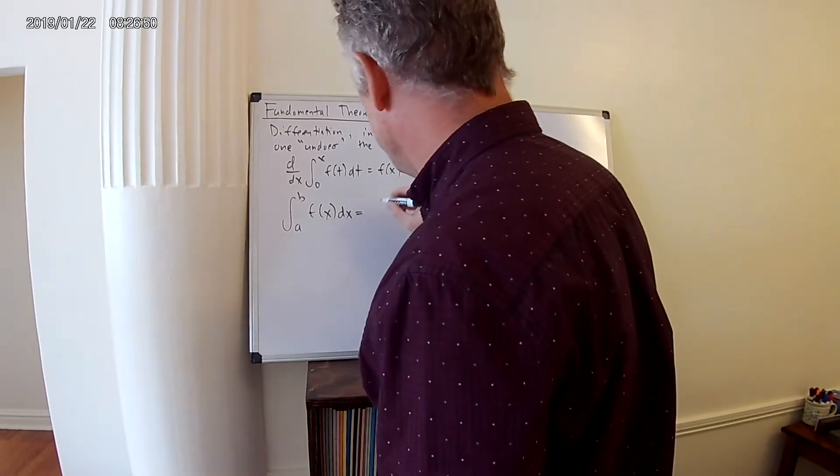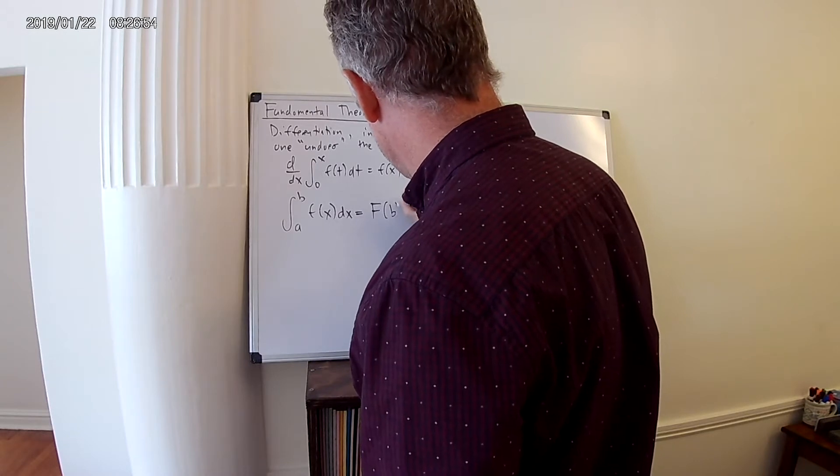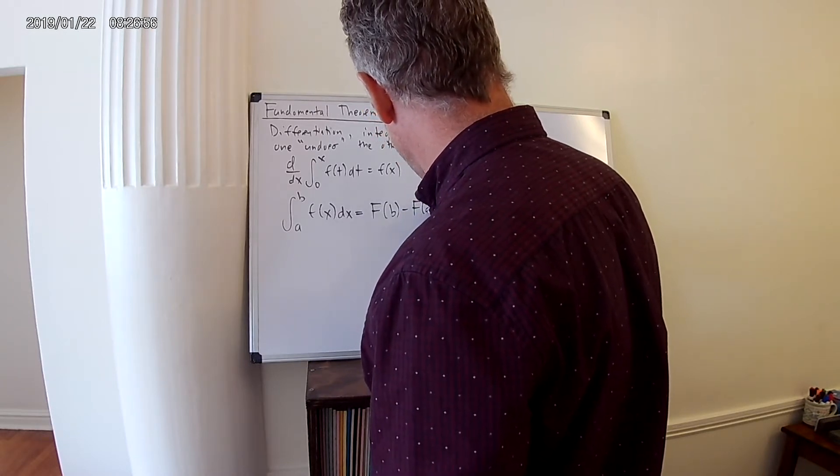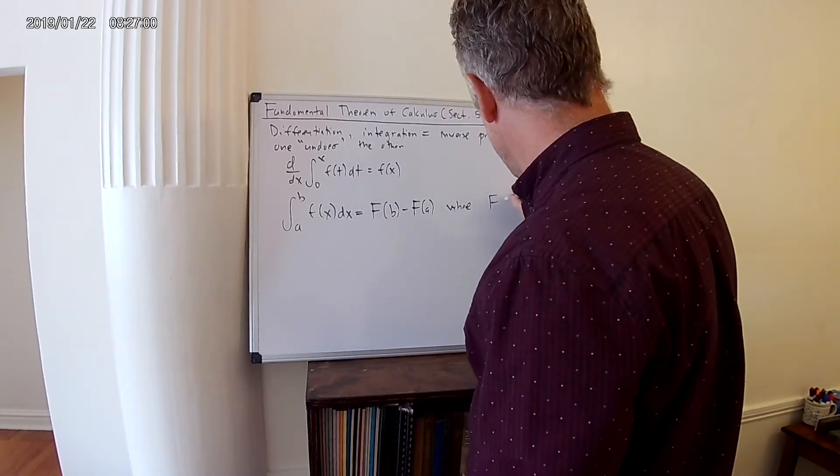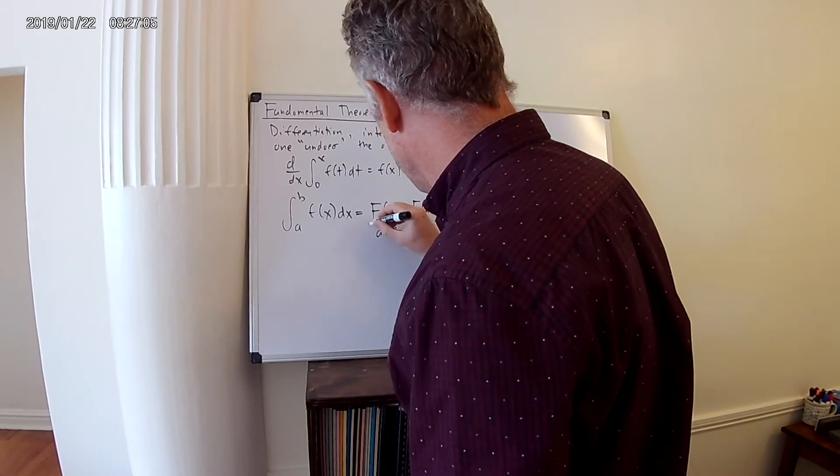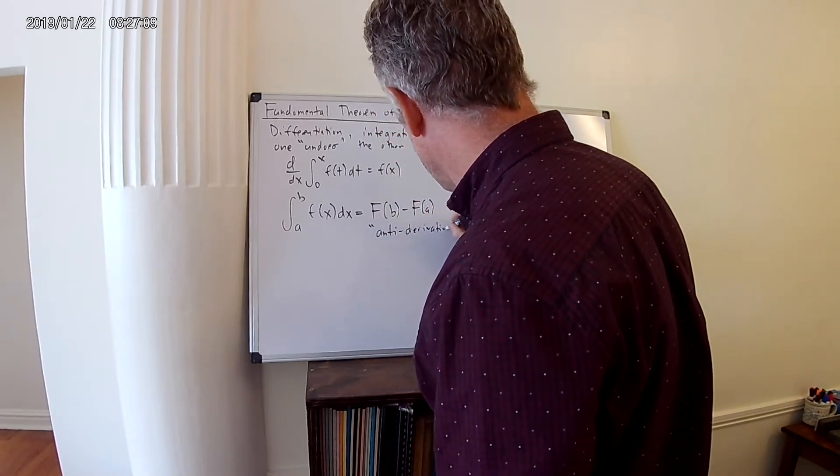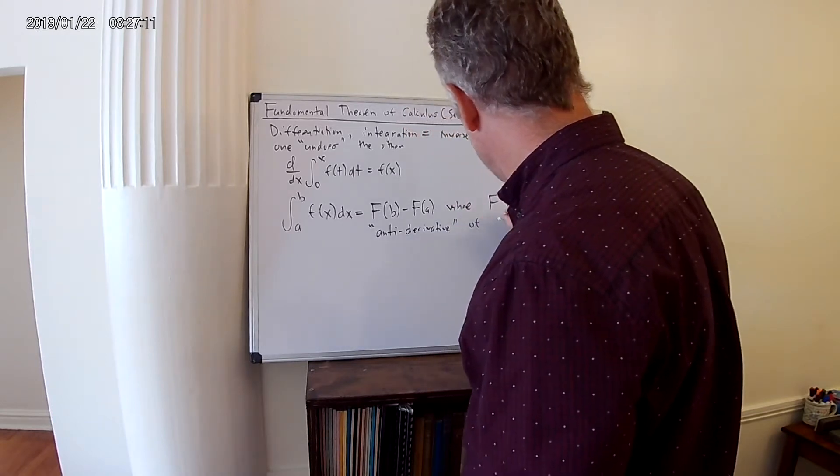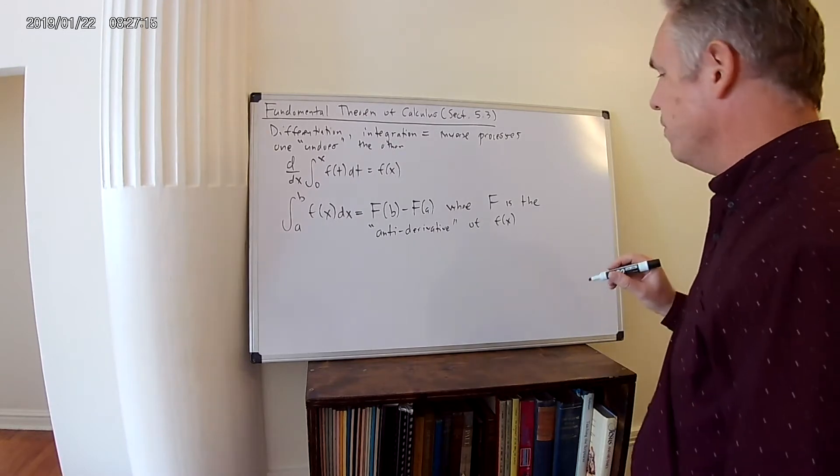What this equals is F(b) minus F(a), where F is the, and here's a fun word, the antiderivative of small f(x).